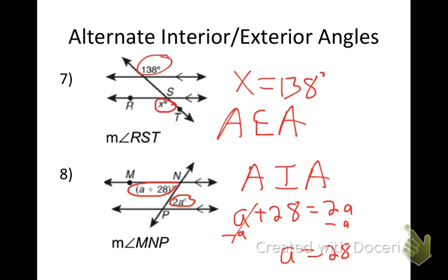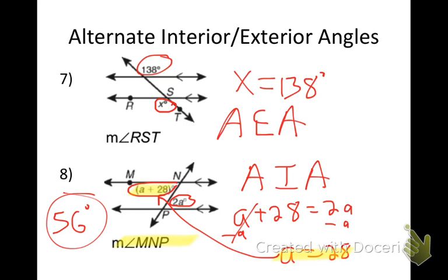Is that my answer? No — I need to find angle MNP. So I take 28 and plug it in: 28 + 28 comes out to be 56 degrees.